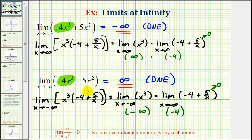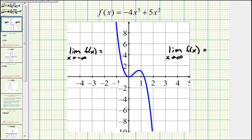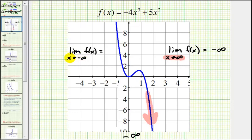Now let's go ahead and graph our polynomial function to verify these limits. Here's the graph of the polynomial function. As x approaches positive infinity, we'd be moving to the right, and notice as we move right, the function goes down very quickly, and therefore the function values are approaching negative infinity, which verifies our first limit. And then as x approaches negative infinity, we're moving left along the graph, and we can see as we move left, the graph moves up very quickly and goes up without bound, approaching positive infinity, which does verify our second limit as well.